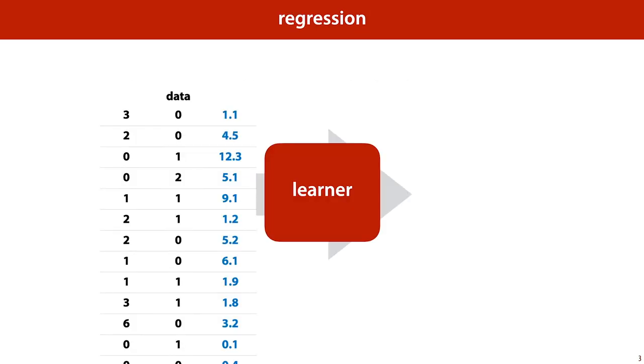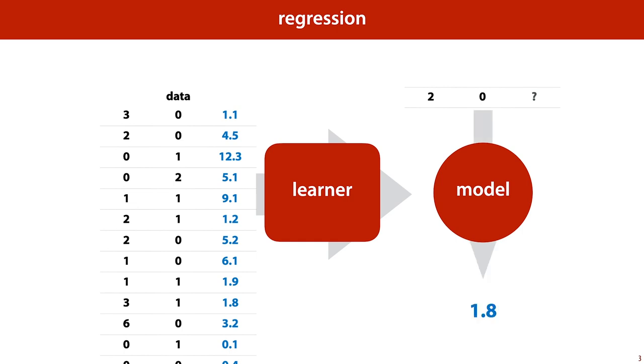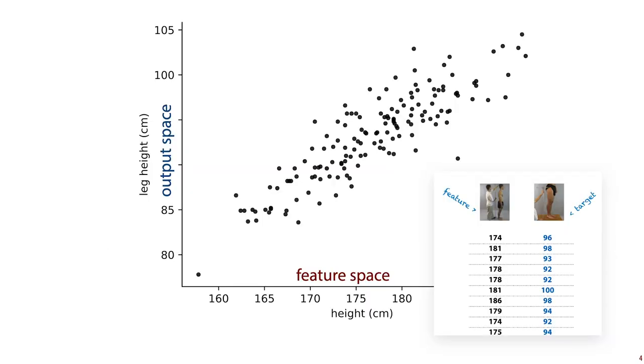We'll start with the abstract task of regression, which we also saw in the last lecture. In regression, our data consists of a table of instances together with their features, and one single target value that we have to predict for each instance. We feed that to a learner. The learner produces a model. And for a new instance, the model produces a prediction of what the target value might be. And the practical example we saw in the last lecture looked like this.